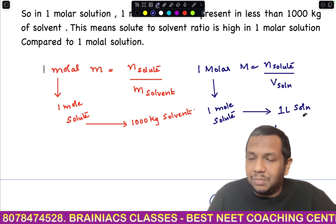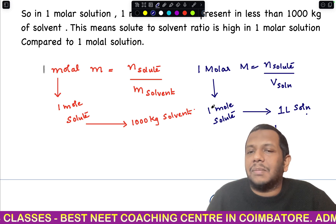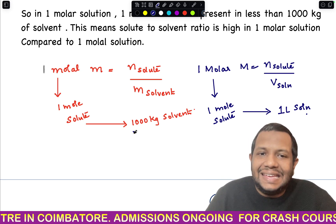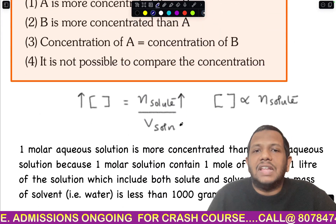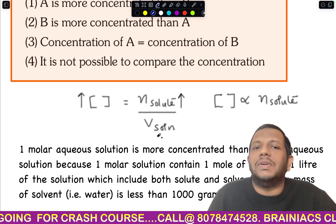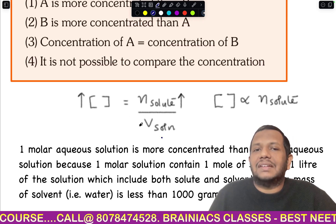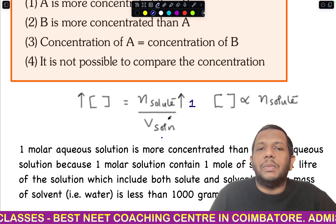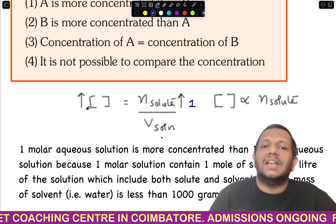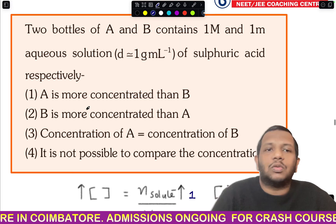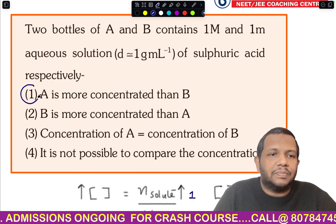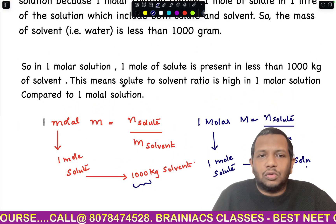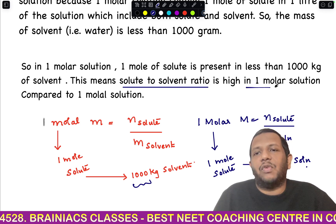Comparing both: in the 1 molal solution, solvent mass is 1000 grams; in the 1 molar solution, solvent mass is less than 1000 grams. Both have 1 mole of solute, but the denominator (solvent/volume) is larger for the molal solution. When the denominator is larger, concentration decreases. Therefore the 1 molar solution is more concentrated than the 1 molal solution — the answer is option A.